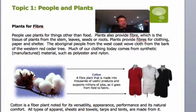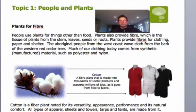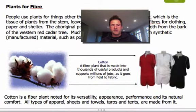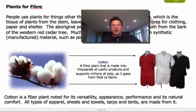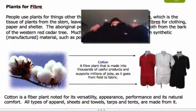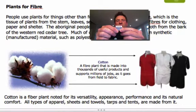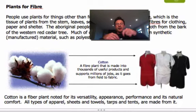Now this other shirt is made from more natural fibers — cotton. There's a picture of it on the screen here. Cotton can be used for thousands of useful products. It supports a lot of jobs and industry and it's a very important crop. If you look at the tag on this shirt, it says 100% cotton. So this is made from natural fibers.